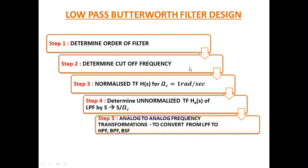The steps needed to design a low pass Butterworth filter are as follows. Step 1: from your design specifications, determine the order of the filter. Step 2: determine the cutoff frequency. Step 3: determine the normalized transfer function H(s), where the cutoff frequency omega_c is 1 radian per second. Step 4: find the unnormalized transfer function H_i(s) from H(s) by substituting s → s/omega_c. Step 5 is an optional step needed if you are designing a high pass filter, band pass filter, or band stop filter.